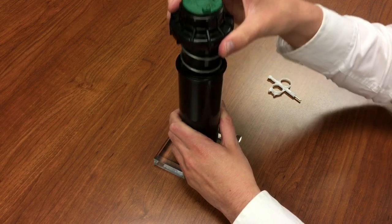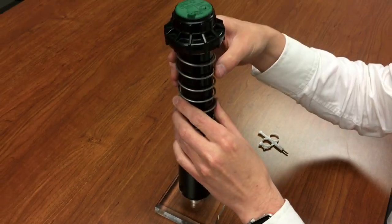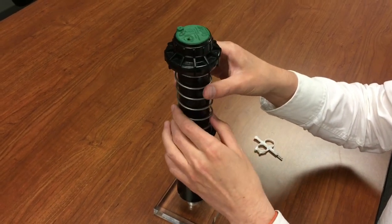So once you get that screwed off, you pull that out, and then you would just rotate this until the starting point up here is where you want it to start.